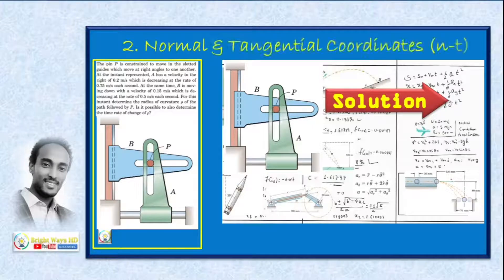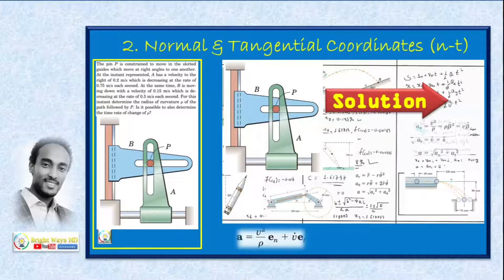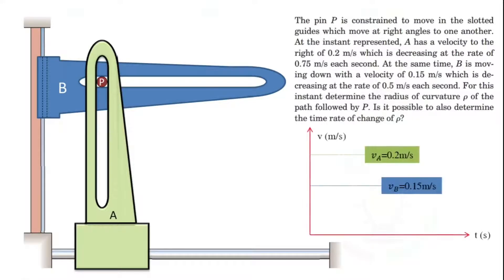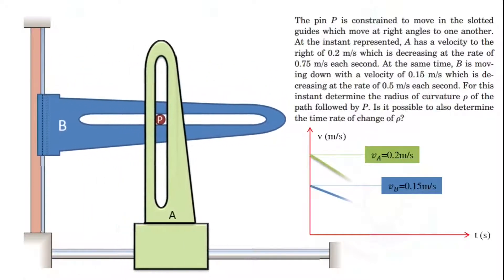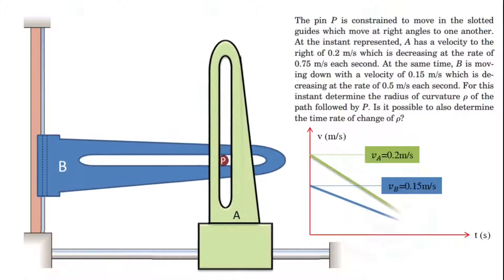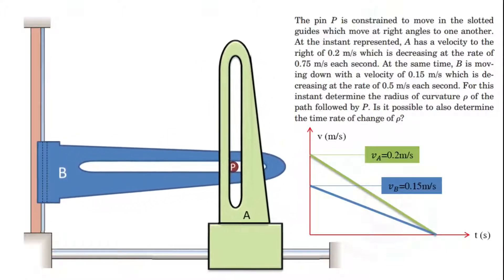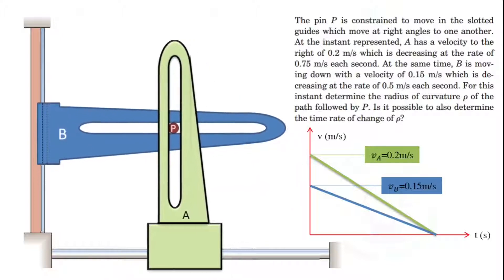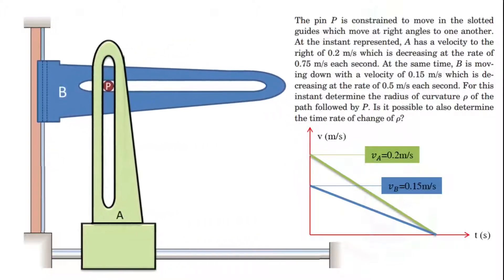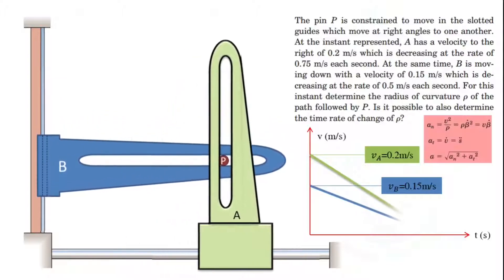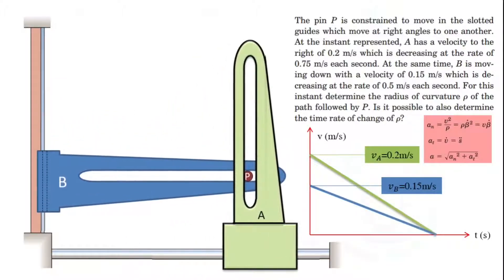In this video we'll see how the normal-tangential coordinate system is applied for solving problems. The question states that pin P is constructed to move in slotted guides which move at right angles to one another.